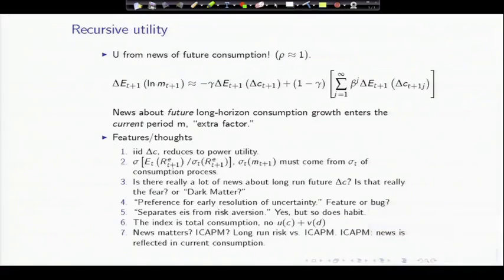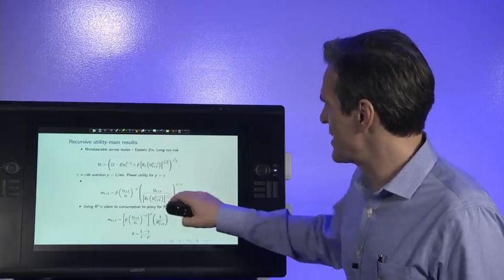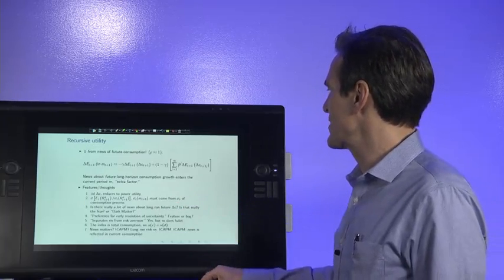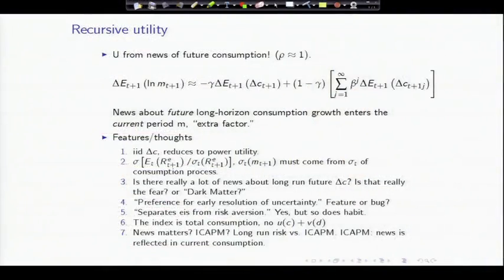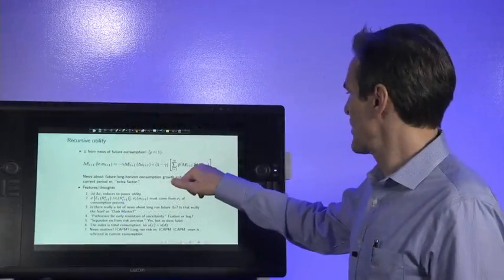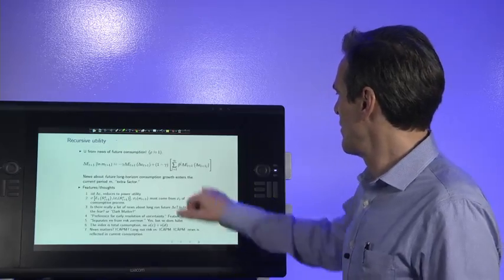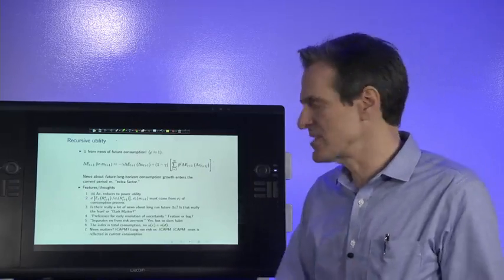The last major analytical result is that at least as an approximation, our whole job is how do we measure this change in utility index. You can also measure it from consumption itself. So this is a linearization that changes in the log marginal utility are the power utility term again, right? Changes in consumption growth, and then another term, changes in expectations of future consumption growth that don't affect today's consumption. So here what we're doing is we are again measuring this change in utility index, but we're measuring it by measuring the consumption that happens in the future, not just the rate of return on some asset which proxies for consumption growth.